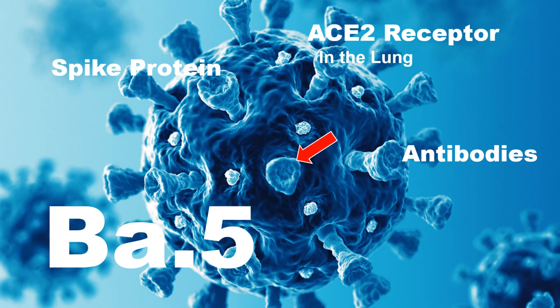How does the body fight infection against the coronavirus and its sub-variants? Antibodies are very important in this fight. The immune system makes antibodies stimulated by previous infection or vaccination. Our antibodies attach to the spike protein on the virus and stop it from attaching to the cell. The BA5 sub-variant has mutations that have changed the shape of the spike protein, preventing the antibody from attaching properly, helping it evade our body's immunity.